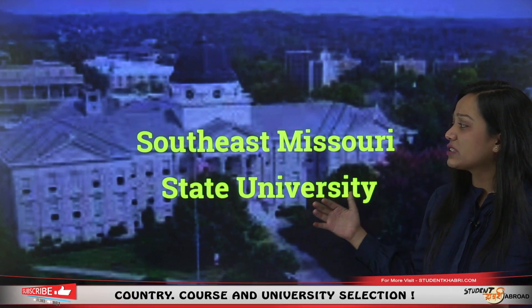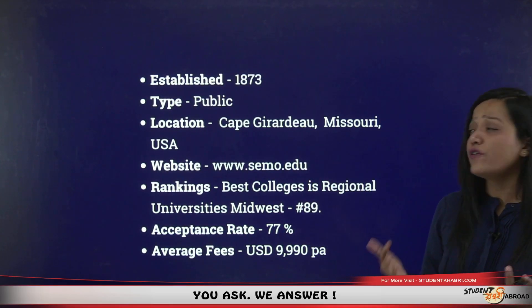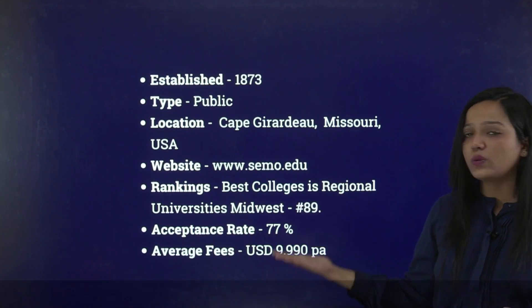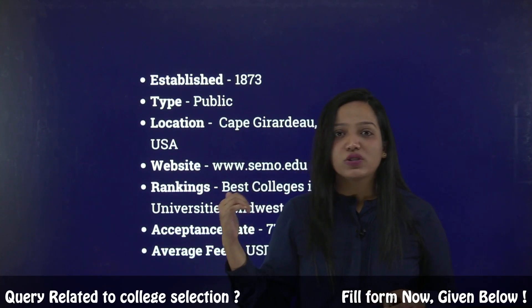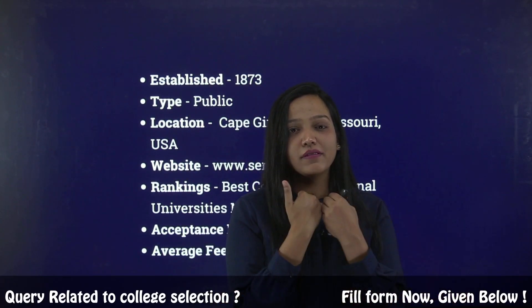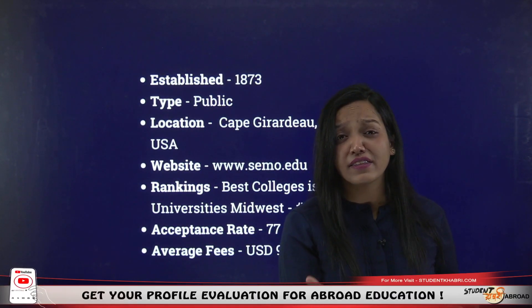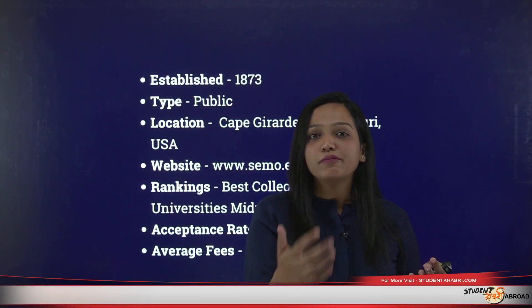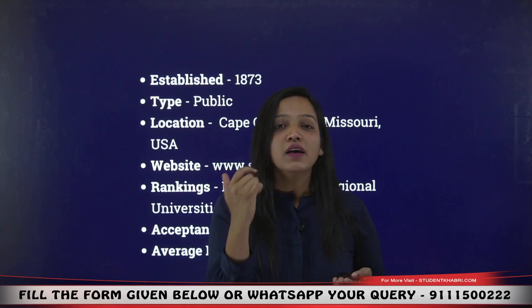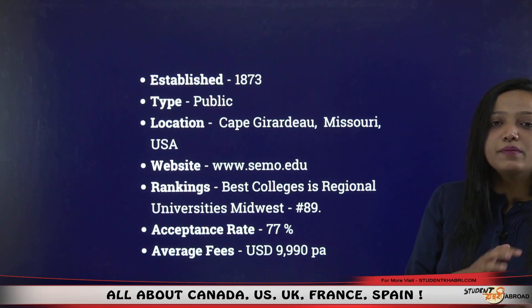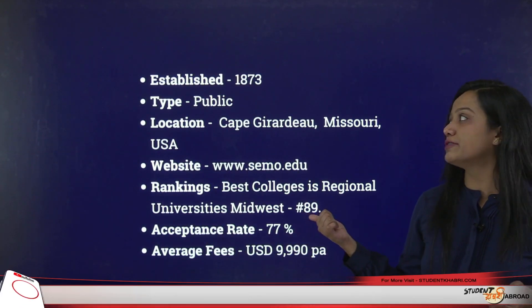Next is Southeast Missouri State University, established in 1873. It's also a government university, ranked 89th among regional universities in the Midwest. The acceptance rate is 77% — out of 100 applications, 77 students make it. Notably, many of the colleges discussed so far have 100% acceptance rates, which is uncommon compared to other colleges where rates can be 10–15%. One reason is that community colleges and those without strong national rankings tend to accept more applicants easily. Average fees are $9,990 US dollars per annum.